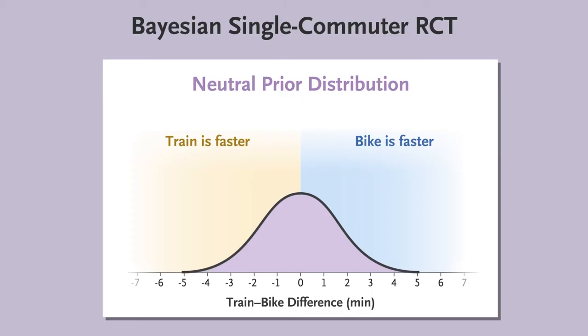In other words, your prior distribution says it's equally likely that cycling or riding the train is faster.